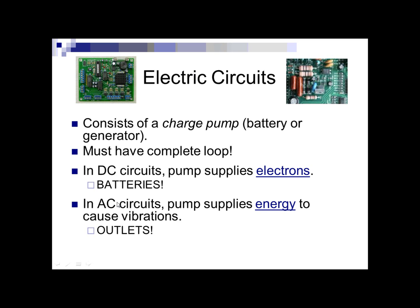AC circuits, on the other hand, stand for alternating current. With AC, you supply energy, and what it does is take the electrons that are already in the wire and cause them to vibrate back and forth — hence alternating. You alternate directions, back and forth. This is what your wall outlets and light fixtures run off of — alternating current.